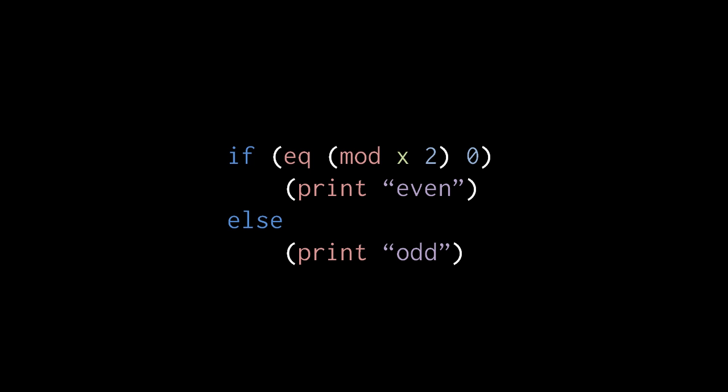One useful thing to do with the mod operator is to test whether a number is even or odd. Here when we write mod x 2, when x is an even number, mod x 2 will return 0. So here in this code, when x is even, mod x 2 returns 0, and yes, 0 is equal to 0, so the condition of the if is true, and the code prints even.